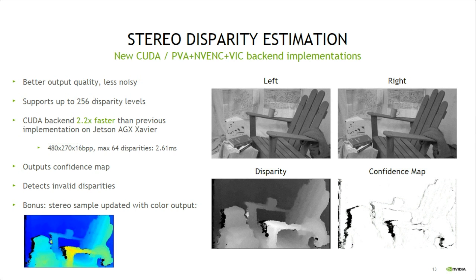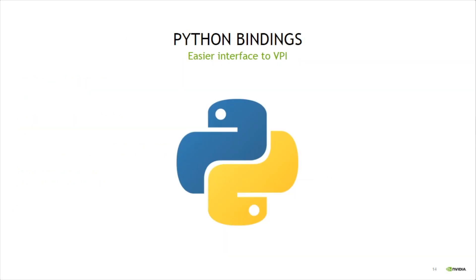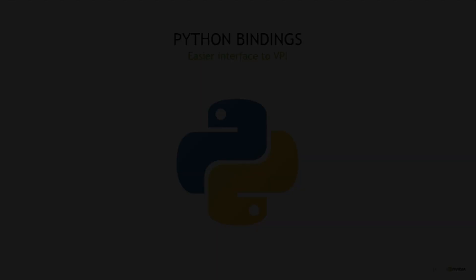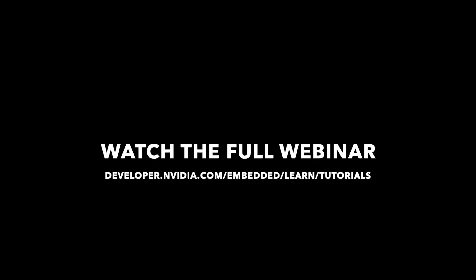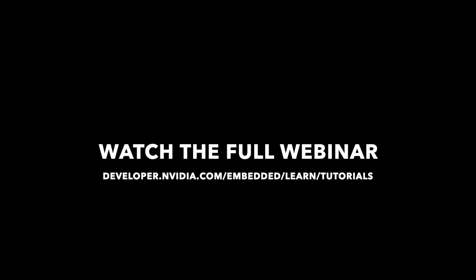And finally, as a bonus, the stereo sample got updated with color output and support for the new PVA-NVENC VIC backend. Last but not least, VPI can now be used in Python scripts. We will dedicate the rest of this webinar to it.